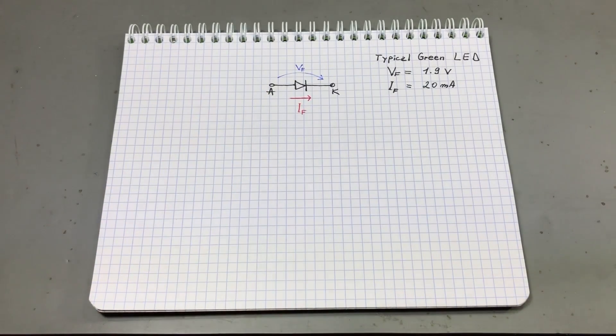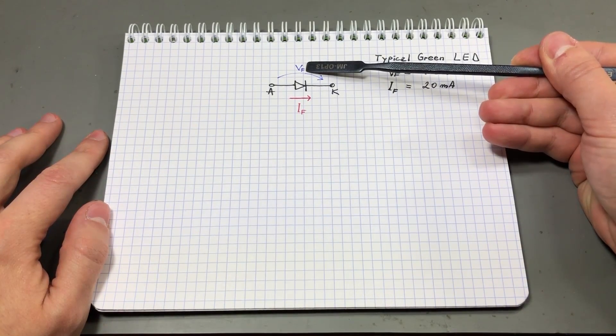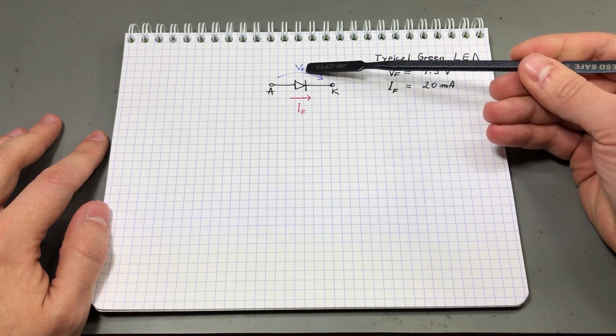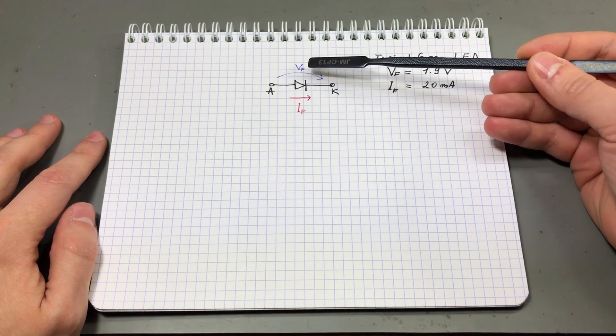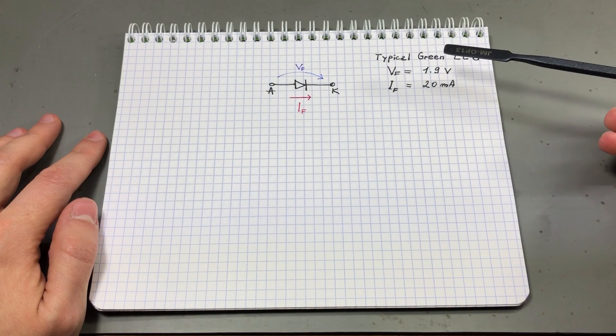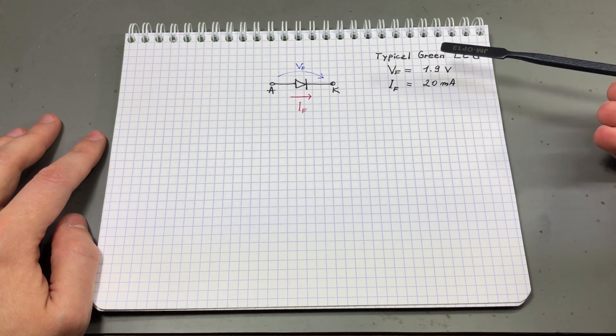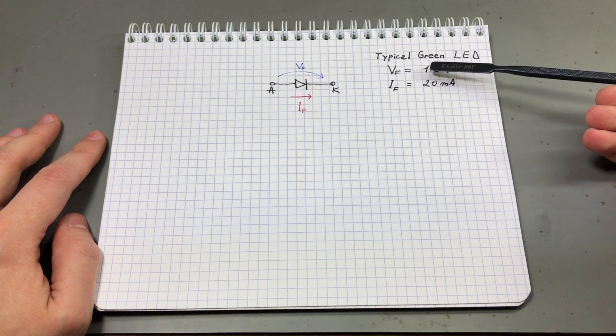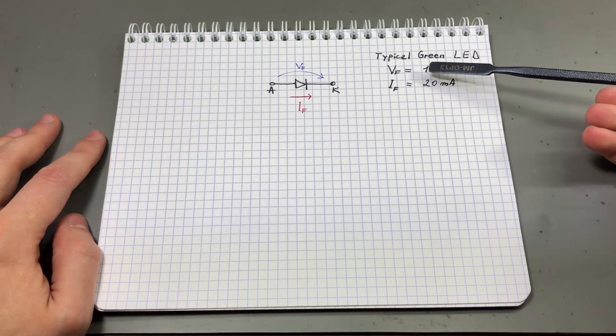So an LED is a diode that emits light under certain conditions. It will have a forward voltage which is the level at which the diode starts conducting and emitting light. So let's take for example a typical green LED. It will have a forward voltage of about 1.9 volts. This figure can vary, you will find it in the datasheet of the LED.